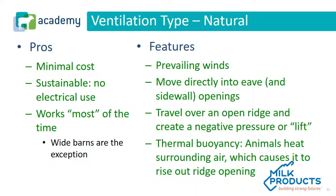With natural ventilation, we think about prevailing winds, sidewall openings, eaves, and open ridges. Animals within the barn produce heat, creating what we call thermal buoyancy — warm air has a tendency to rise. However, in young calf barns, calves don't produce nearly enough heat to create this thermal buoyancy effect.